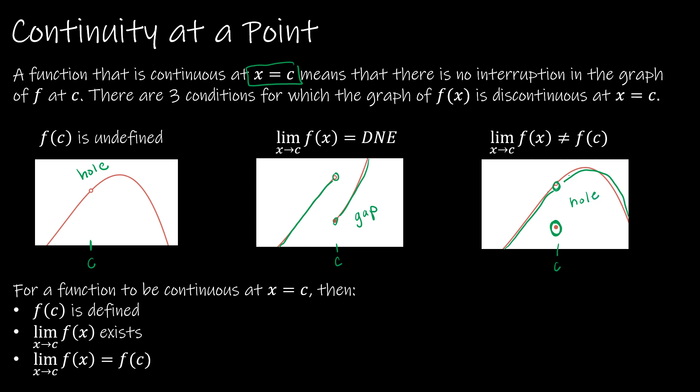So for a function to be continuous, essentially all of those discontinuities can't happen. f of c must be defined, the limit must exist, and those two things must be equal to one another.